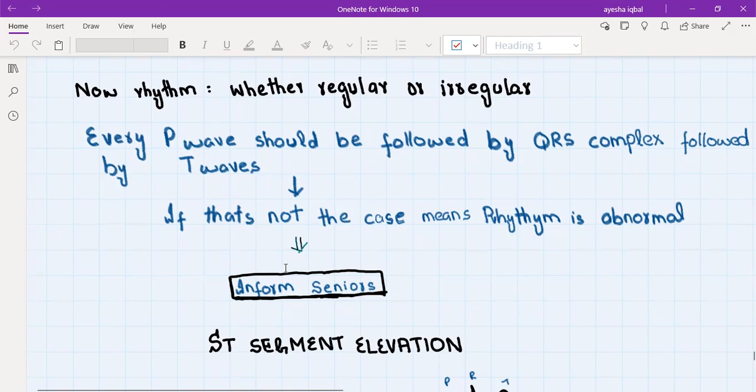Also the number of big squares between the two R waves need to be the same throughout the ECG. If the number of big squares between the first two R waves is three, then the same number of big squares should be there between the next two R waves and the next and the next. This pattern should be uniform throughout the ECG as well. But if there is difference in the number of big squares between two R waves in the ECG, then it means that the heart rhythm is irregular and we need to inform our seniors.